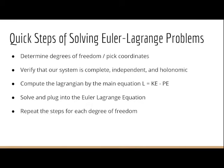Then we want to pick our coordinates, which could be Cartesian or polar, basically whatever is convenient to predict the path. We want to verify that our system is complete, independent, and holonomic, meaning that it's conservative and isolated. Then we want to compute the Lagrangian by the main equation L equals KE minus PE. We will then solve and plug it into the Euler-Lagrange equation and repeat the steps.